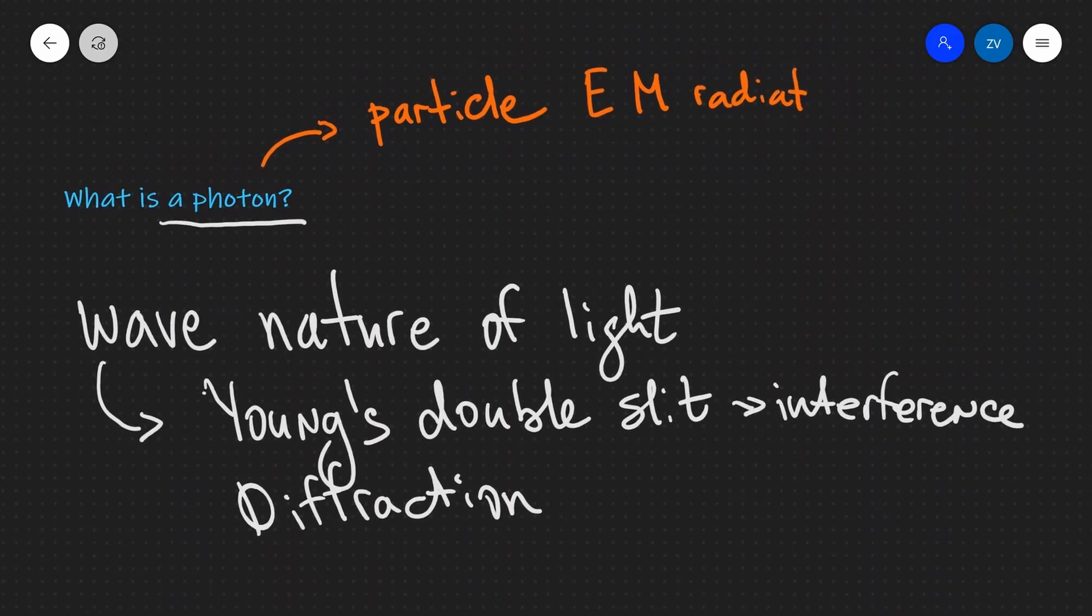Particle of EM radiation, for example, visible light or UV light, et cetera. Additionally, a photon has a mass of zero. So that's really important. So the mass is equal to zero.